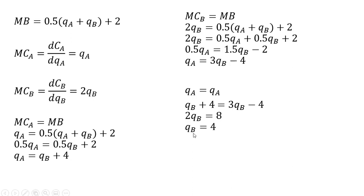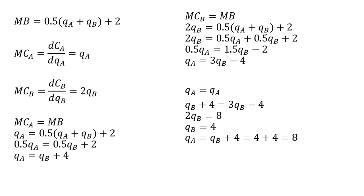Firm B will ideally reduce pollution by four units. And since firm A's optimal Q_A equals Q_B plus four, firm A will reduce eight units of pollution. So in total, 12 units of pollution are being reduced, which is the efficient outcome.